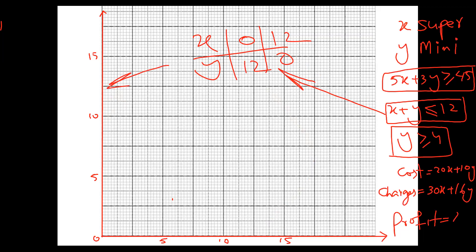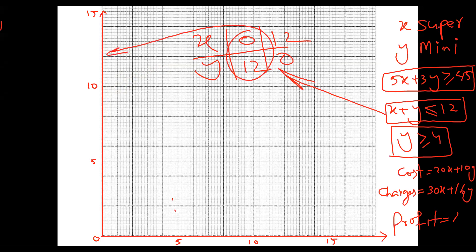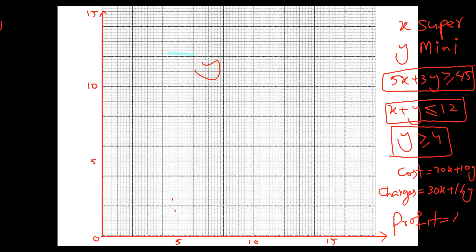Let me check the scale carefully. Counting along the axis: 1, 2, 3, 4, 5 ... 10 ... 15 — correct. And on the Y-axis similarly: 1, 2, 3, 4, 5 ... 10 ... 15. Everything is correct. Now I'll label the point 12 on both axes and draw the line for X plus Y equals 12.